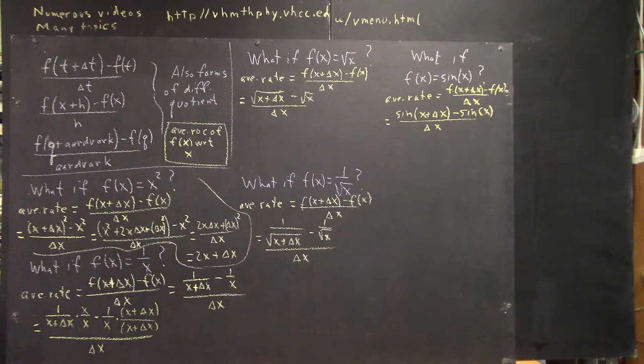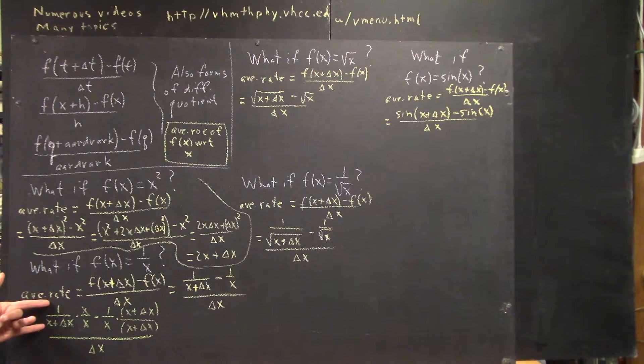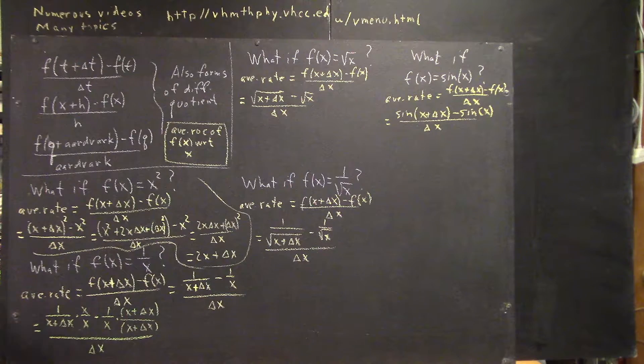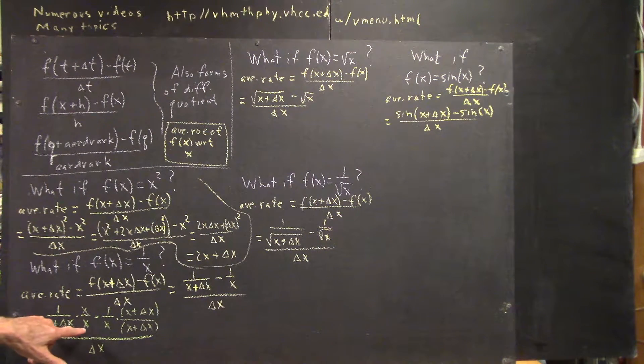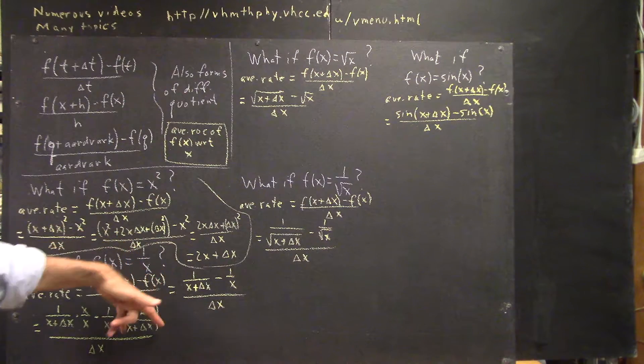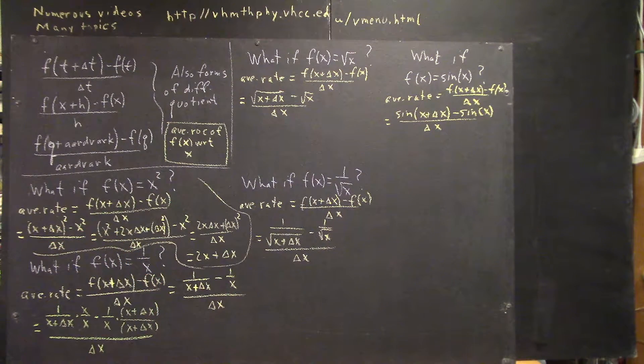OK, now all I've done is I've multiplied this fraction by x over x, which is just like multiplying it by 1. That's not going to change the value of this fraction. And over here, I've done the same thing, but I've multiplied by x plus delta x over x plus delta x.